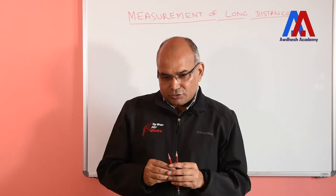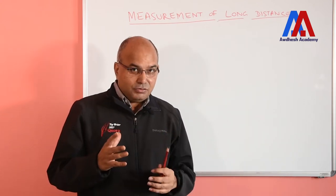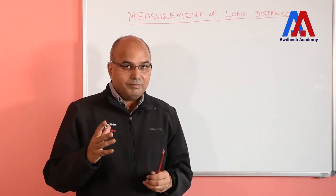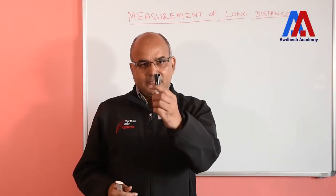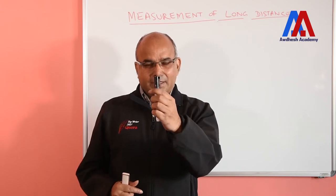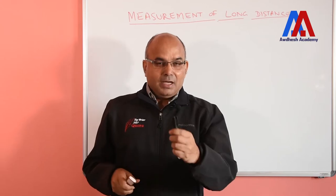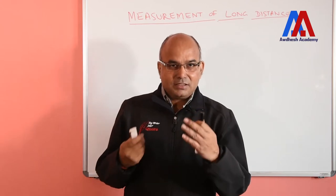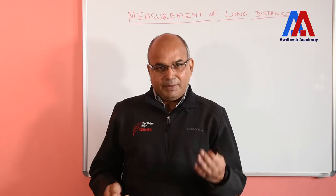This is the principle called the Parallax Method, and it is used for measuring long distances. Parallax means that the same object is seen at a different position from the left eye and from the right eye. The distance between the base — that is, between the two observation points, like the eyes — is called the Basis. This is the principle we can use to measure very long distances.